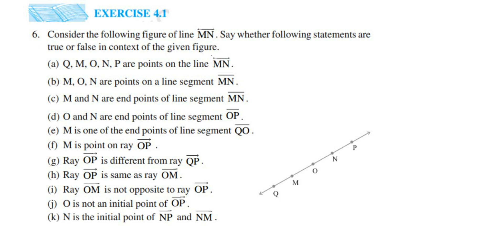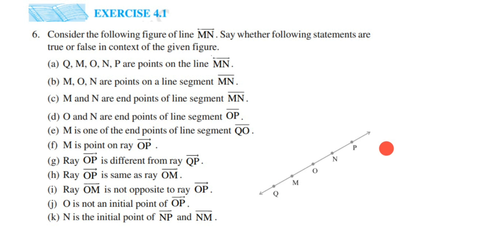Hey everyone, here is a question from exercise 4.1, the sixth question. The chapter is Basic Geometrical Ideas of class 6. This is the last question of this exercise. The question is based on true and false. Consider the following figure of a line MN and see whether the following statements are true or false in the context of the given figure.